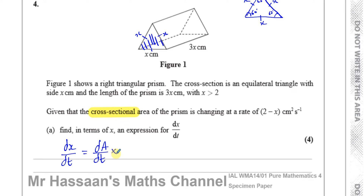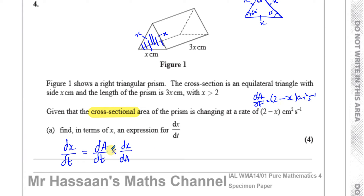To find dx/dt, I need to get rid of dA. If I multiply dA/dt by dx/dA, I end up with dx/dt, which is what I need. We were given dA/dt, which is 2 minus x centimeters squared per second, and we have to multiply by dx/dA. That means I need to find what dx/dA is.